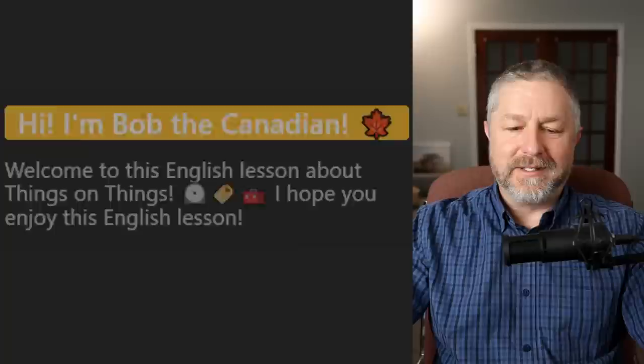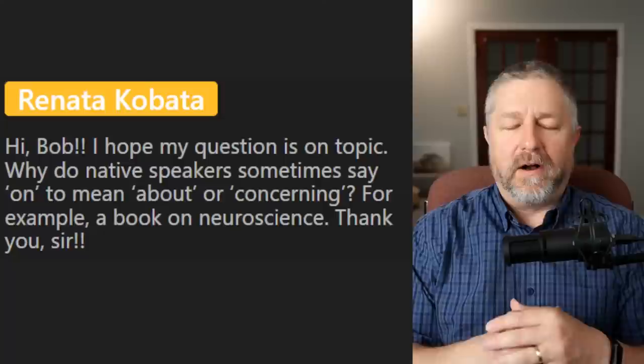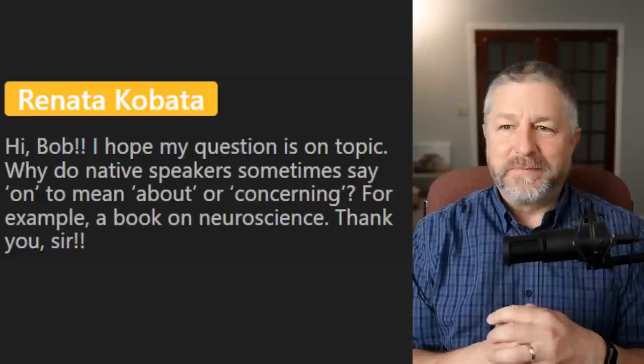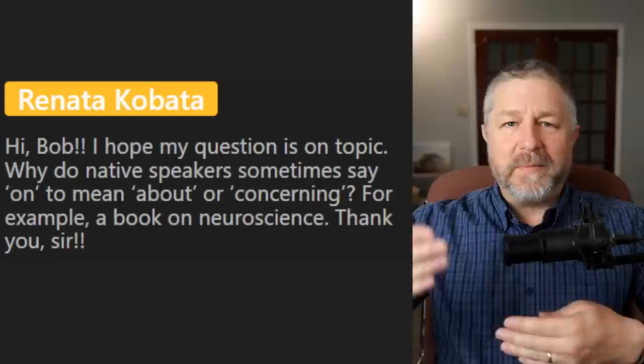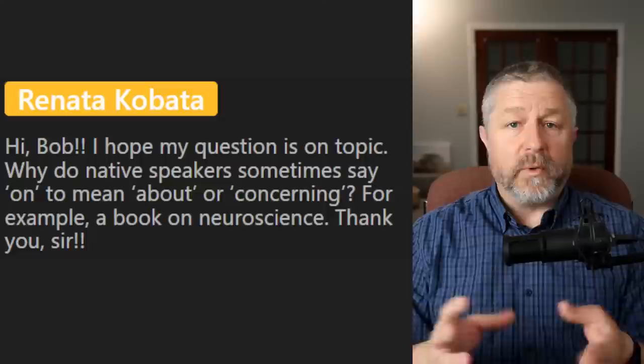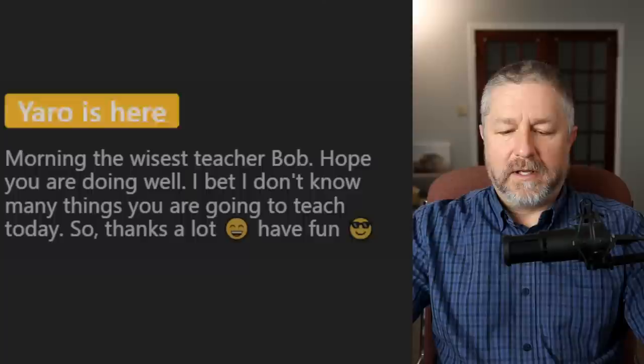First question from Renata: why do native speakers sometimes say 'on' to mean 'about' or 'concerning'? For example, 'a book on neuroscience.' It's funny because even when making a lesson title I think, 'Is it a lesson about time or a lesson on time?' We do use them interchangeably. I think 'about' is the better choice most of the time.